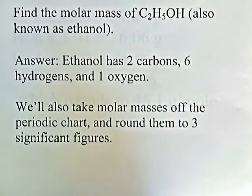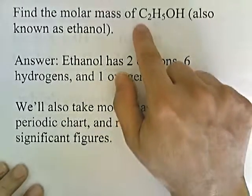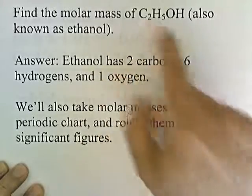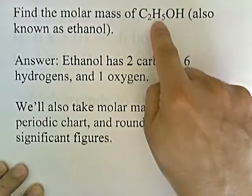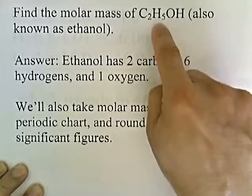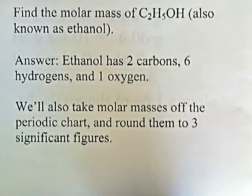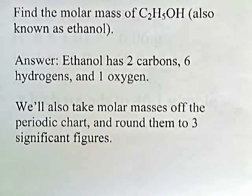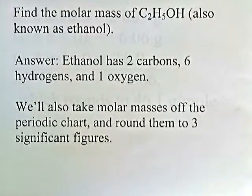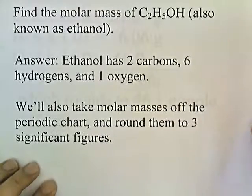To start, we have to count the number of each type of atom in the compound. Ethanol has two carbons and six hydrogens — five here and one there — so six hydrogens and one oxygen. We'll also need to take the molar masses off the periodic chart and round them to three significant figures. The reason we're rounding to three significant figures is because in high school science labs the equipment is only accurate to three significant digits most of the time, so that's the standard we'll use.